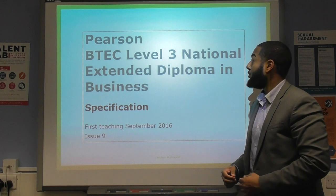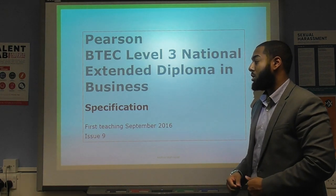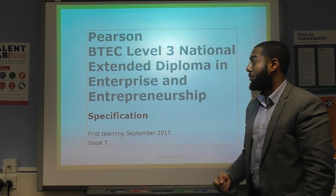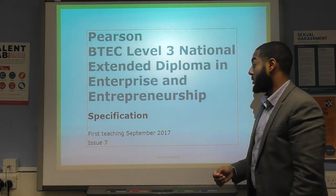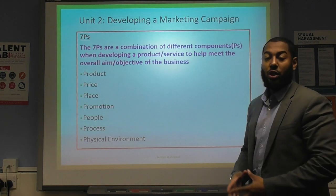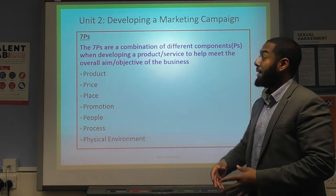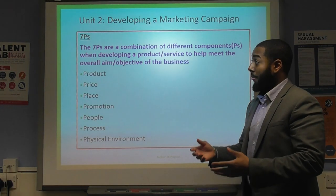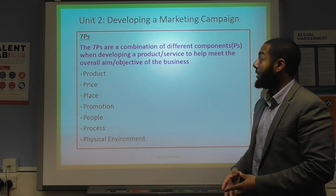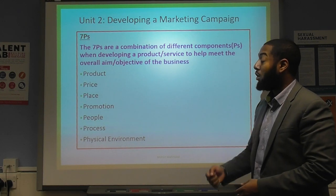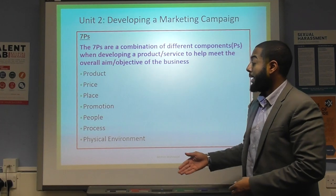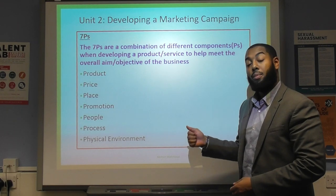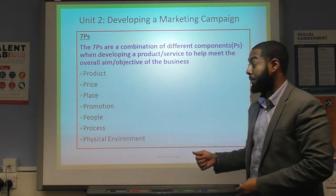This is the Pearson BTEC Level 3 National Extended Diploma in Business specification from first teach in September 2016, also for those studying the enterprise and entrepreneurship course. We're going to be looking at the seven P's, which is worth roughly 20 marks in the Unit 2 Developing a Marketing Campaign exam. The seven P's are a combination of different components when developing a product or service to help meet the overall aim or objective of the business. The seven P's are: product, price, place, promotion, people, process, and physical environment.